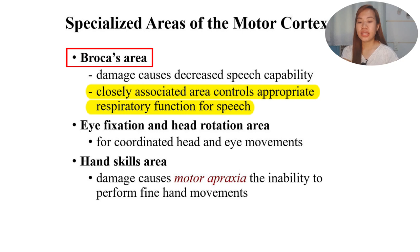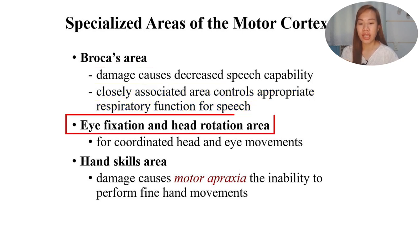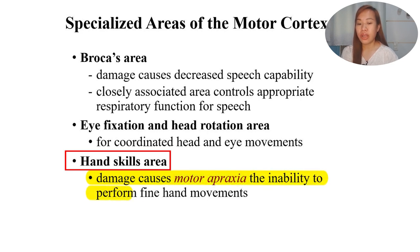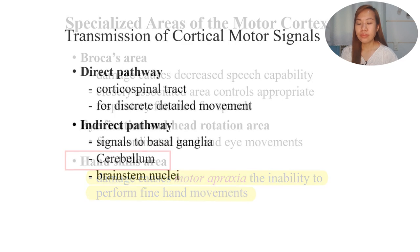Another specialized area of the motor cortex is the eye fixation and head rotation area, specific for coordinated head and eye movements. There is also the hand skills area. When this is damaged, it will cause motor apraxia - the inability to perform fine hand movements.